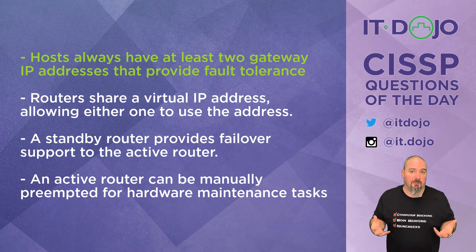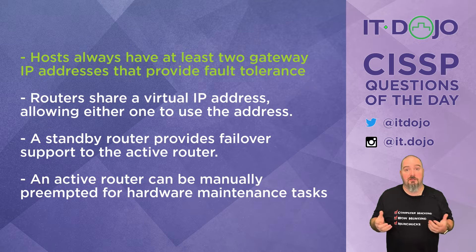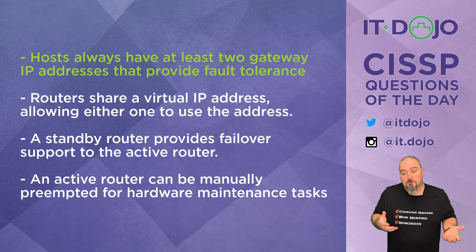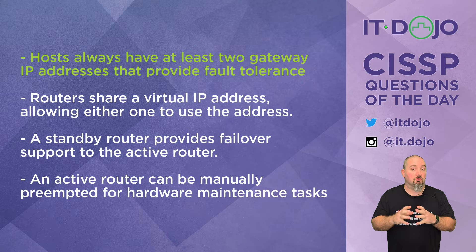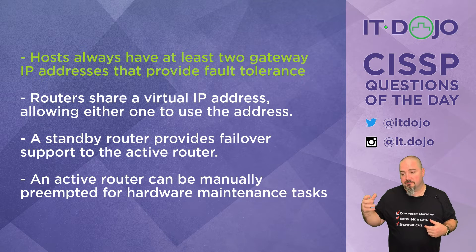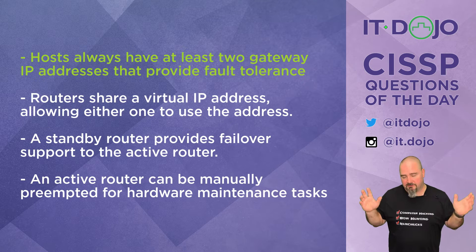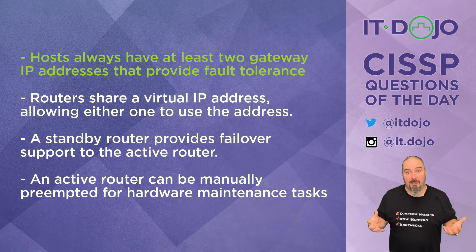So that's actually the correct answer, but let's walk through the other choices. The second answer choice says the routers share a virtual IP address so that either one of them could use it — that's true. They each have their own interface IP addresses, but there's a third address which is the virtual router's IP address, and the two of them share that one. One is typically active on the address while the other is standby, and that one virtual IP address being shared between the two is the whole idea behind this.